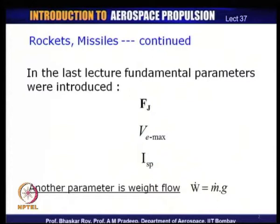I will now add another parameter called weight flow. In most rocket engines, the flow rate of propellants and oxidizers together is often expressed in terms of weight flow rather than mass flow, as is done in most air-breathing engines. In the air-breathing jet engines we studied earlier, the mass flow going in and coming out of the engine was expressed in terms of mass flow.